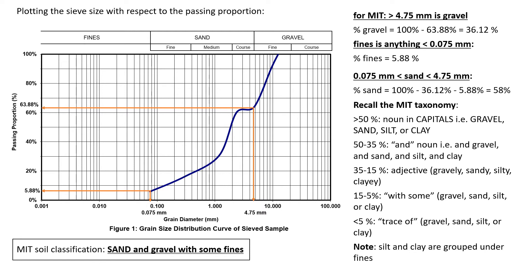In this particular example, we don't even need to plot the grain size distribution to determine the MIT classification, because we already have 4.75 millimeters as a sieve size in the mechanical sieve. So we can just work it out from the table alone without going through all the plotting work. I decided to plot the grain size distribution just to give a sense of the soil, and also because it's a good skill to be able to read a grain size distribution curve.